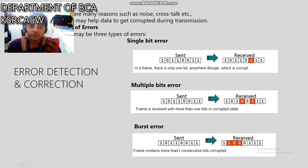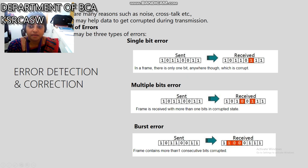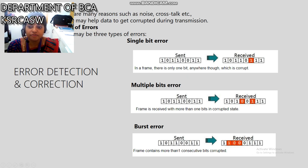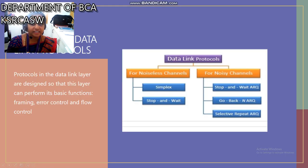In multiple bit errors, more than one bit or number is corrupted. This is an example of multiple bit errors. Burst error means more than one consecutive bit is corrupted. This is an example of a burst error.